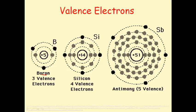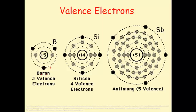Boron has 2 electrons in its outermost shell, and since the second shell can hold 8 electrons, the outermost shell of boron is not full. Silicon has 4 valence electrons in its outermost shell, and antimony has 5 electrons in its outermost shell.